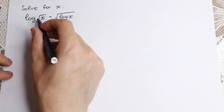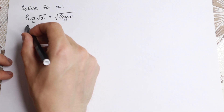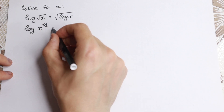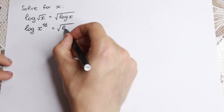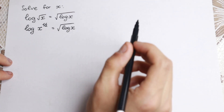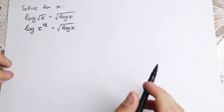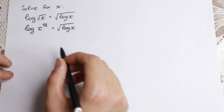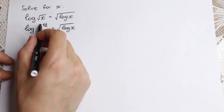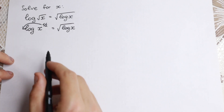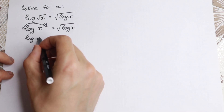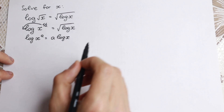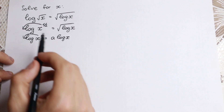Firstly, I rewrite the square root of x as x to the power one-half. We'll have logarithm of x to the power one-half equal to logarithm of square root of x. The main property we need right here is when we have a power, this power jumps to the beginning: logarithm x to the power a equals a times logarithm x.